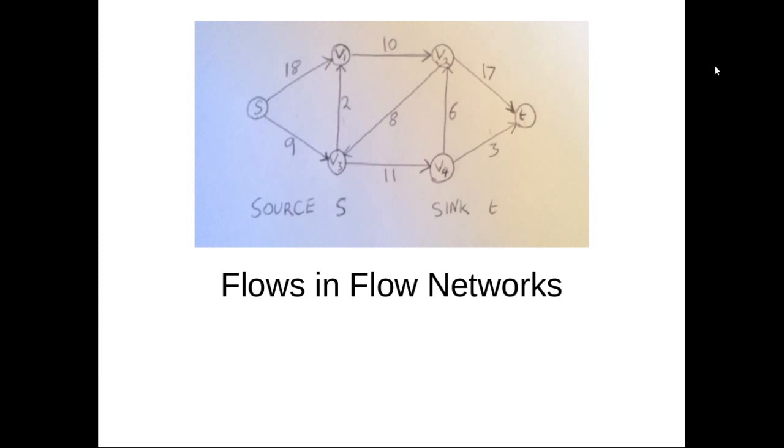So flows and flow networks. For an example flow F in a flow network G, it is a real valued function, and it must satisfy two conditions. The first condition is that for all vertices within the entire collection of vertices, the flow from U to V must be greater than or equal to zero, and it must be less than the capacity of the edge between U and V.